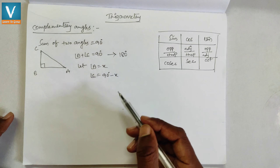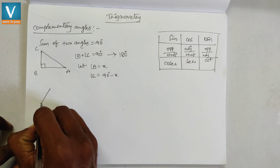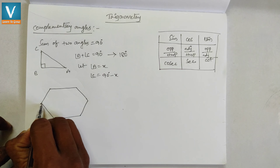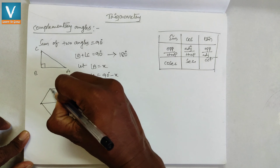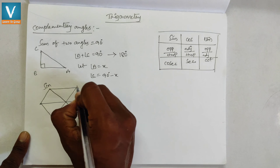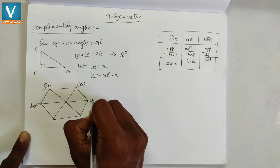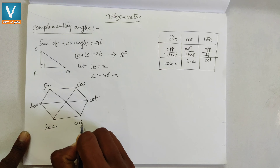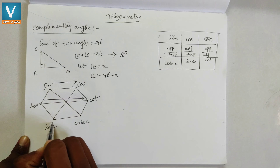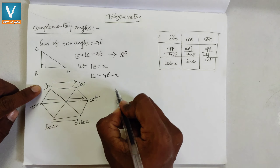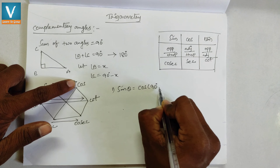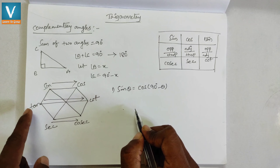Now we'll see the formulas for complementary angles using a hexagon — a polygon with six faces joining the vertices. Writing the six trigonometric ratios: sine, cos, tan, cot, sec, and cosec. The first formula: sine θ = cos(90° − θ).